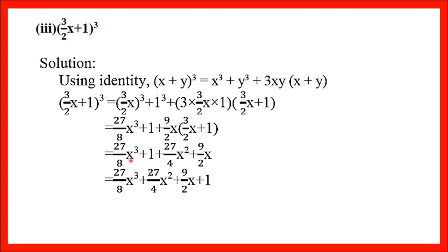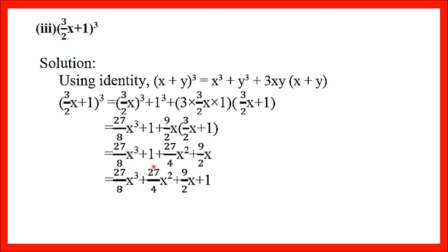Now simplify: first term 27/8 x³ is written as is. Then plus 1. Multiplying: 9/2 × 3/2 = 27/4 x². Then 9/2 × 1 = 9/2 x. Arranging in order: 27/8 x³ + 27/4 x² + 9/2 x + 1. This is how we expand it. I hope you are understanding.